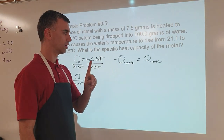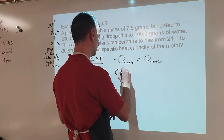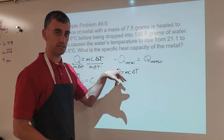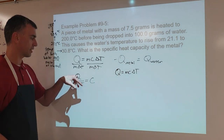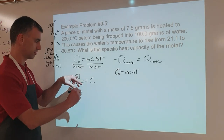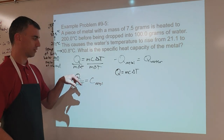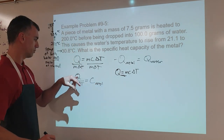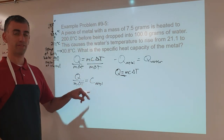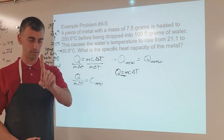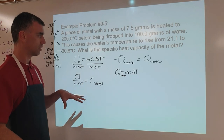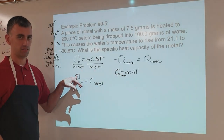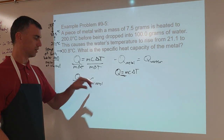So we're going to say q for metal equals q for water. We're going to take q equals mcΔt for the water, figure out what q was using the water's values, then plug it into the metal equation. Once we have q from the water, we can use the mass of the metal and the ΔT for the metal to find the specific heat capacity of the metal. Step one: find q for the water. Then plug that into the metal's equation and solve for specific heat capacity.